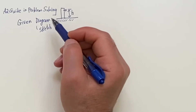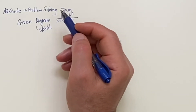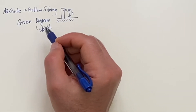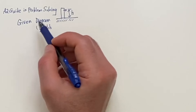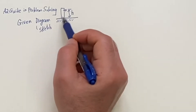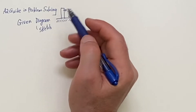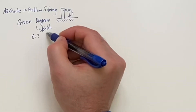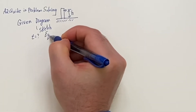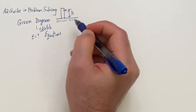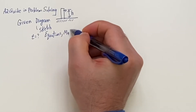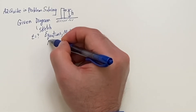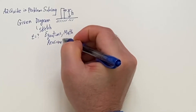State the question so the person grading your homework knows what you're trying to solve. You don't need to recopy the problem exactly, but if you list the given, have a sketch, and make clear what you're solving for — like the time — then you pull out your physics equations and do the math to solve them. Then check to see if your answer is reasonable.